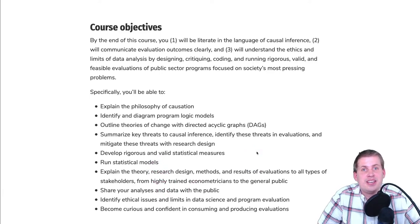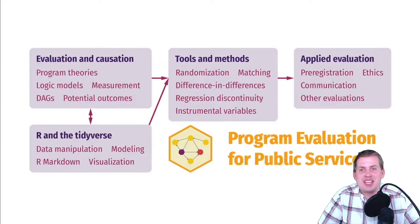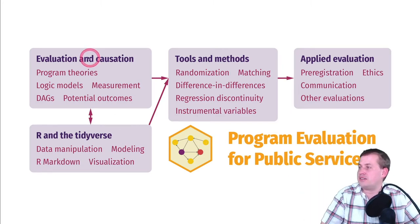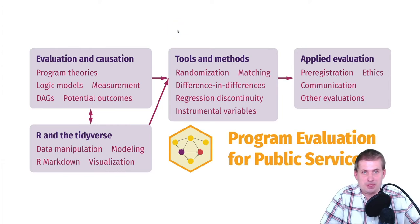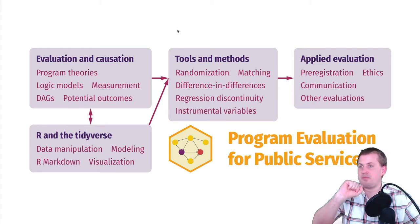I'm pretty sure we covered all of this — congratulations. If you go back to the flowchart on the home page of the course website, this is what we were supposed to have done in this class. We started off talking about evaluation and causation, we talked about program theories and impact theories, and you did a whole bunch of flowchart diagramming to find the connections between inputs, activities, outputs, and outcomes — and you were good at that.